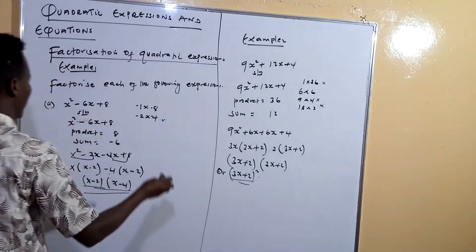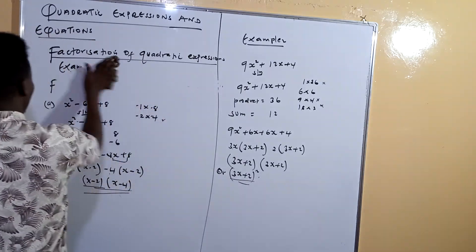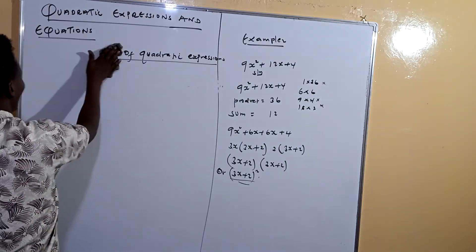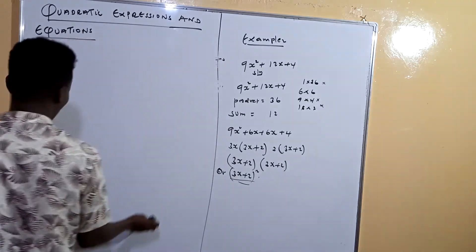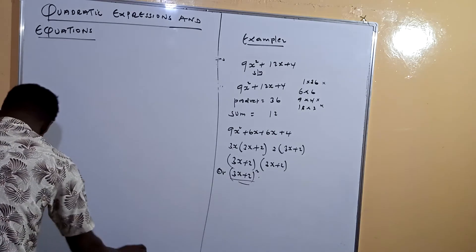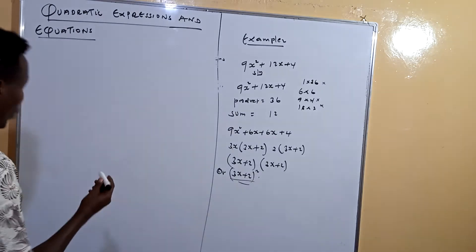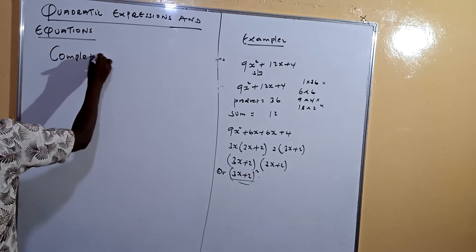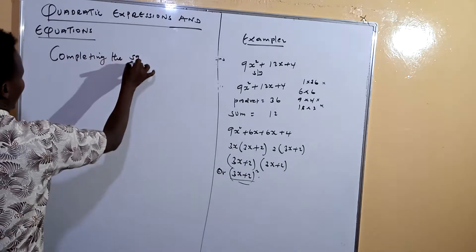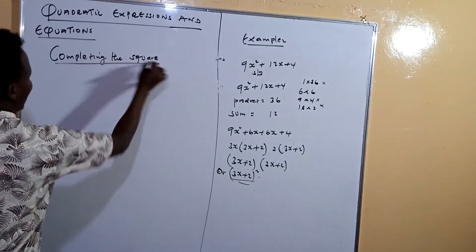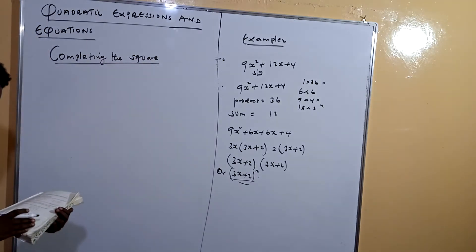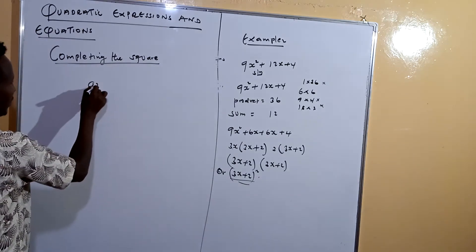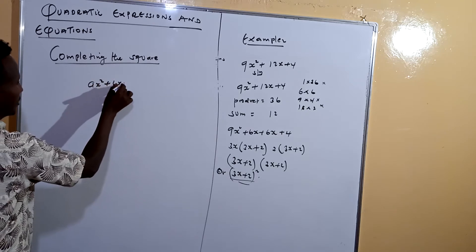In our next concept, we are going to see how to find a missing term — this is called completing the square. Remember, the quadratic expression takes the format ax squared plus bx plus c, and we will be missing one of these terms. We are expected to find the missing term.